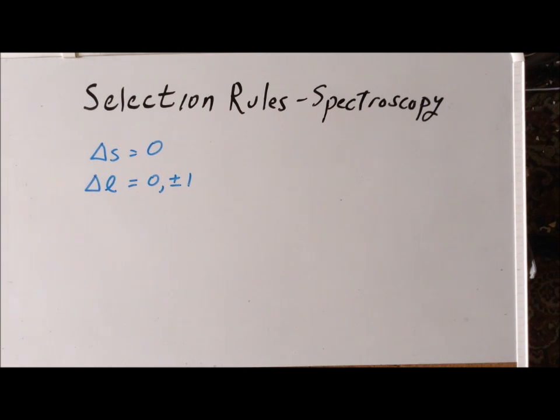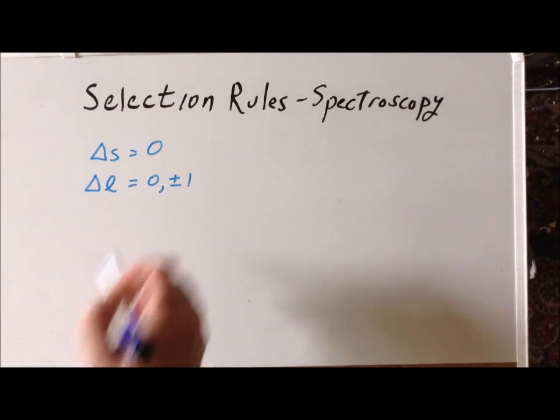A second point to consider is: is it possible for one electron in a one electron system to absorb numerous photons? Can we absorb more than one photon in a single electronic spectroscopy absorption event? In general, no. That's why it's plus or minus one and not plus or minus two, plus or minus three.